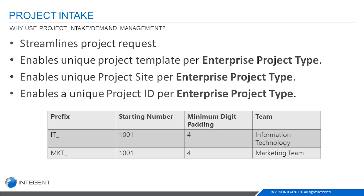The ability to have multiple Enterprise Project Types allows us to have a unique project site per type of project. The project site can store documents, issues, risks, and so forth. You can pre-populate the project site with different types of project collateral per Enterprise Project Type. You can also change other things within the project site to make them very unique, so an IT project type and a marketing project type can have very different project sites.